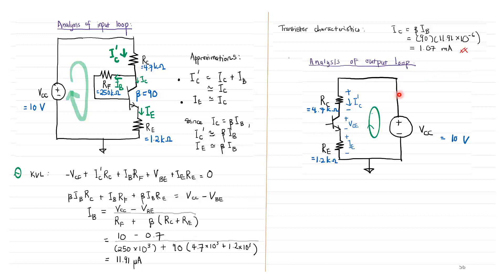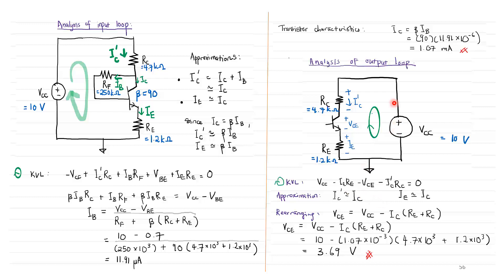Analysis of the output loop gives the operating point. We know IC from IC = βIB, and doing KVL around the output loop gives: VCE = VCC − IC(RE + RC). With VCC = 10V, IC = 1.07mA, RE = 1.2kΩ, RC = 4.7kΩ, we get VCE = 3.96V. The Q-point is therefore (VCE = 3.96V, IC = 1.07mA).